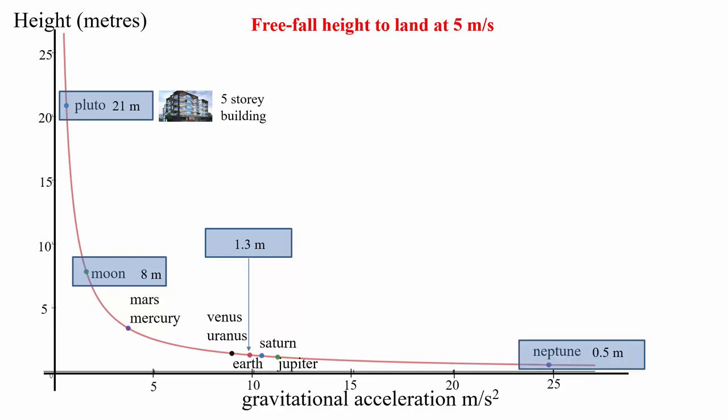And on the other side, we have Neptune, which has a height of 0.5 meters or 50 centimeters. Not much at all. Not much of a height. That means even at a height of about 55 centimeters, you would pretty well probably break a leg.